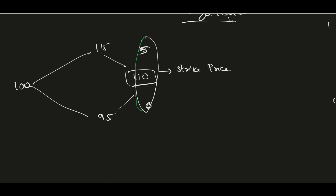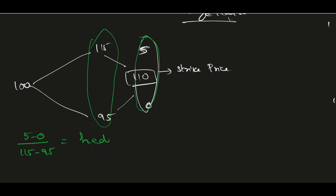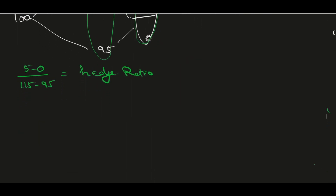So the hedge ratio is: (5 minus 0) divided by (115 minus 95). This is called the hedge ratio. If I calculate numerically, it is 5 by 20, which comes to 0.25. So 0.25 is the hedge ratio.